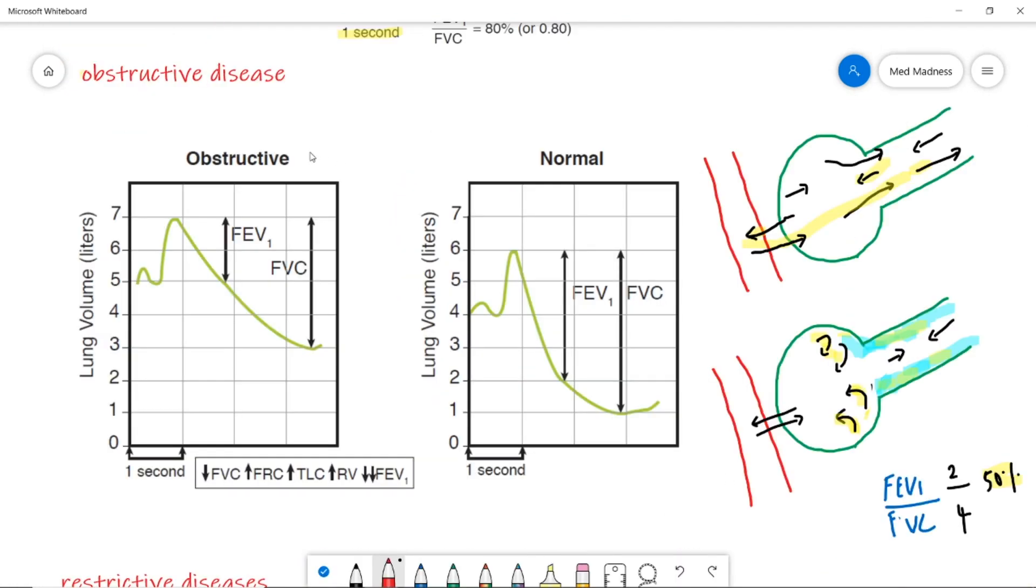Now, moving on to the obstructive diseases. Before going obstructive pattern, let us focus on my sketch here to understand the pathology behind it. Now, this is the normal alveoli. So, the air moves in and out normally. This is the diseased alveoli. Here, you can see some obstructions, right?